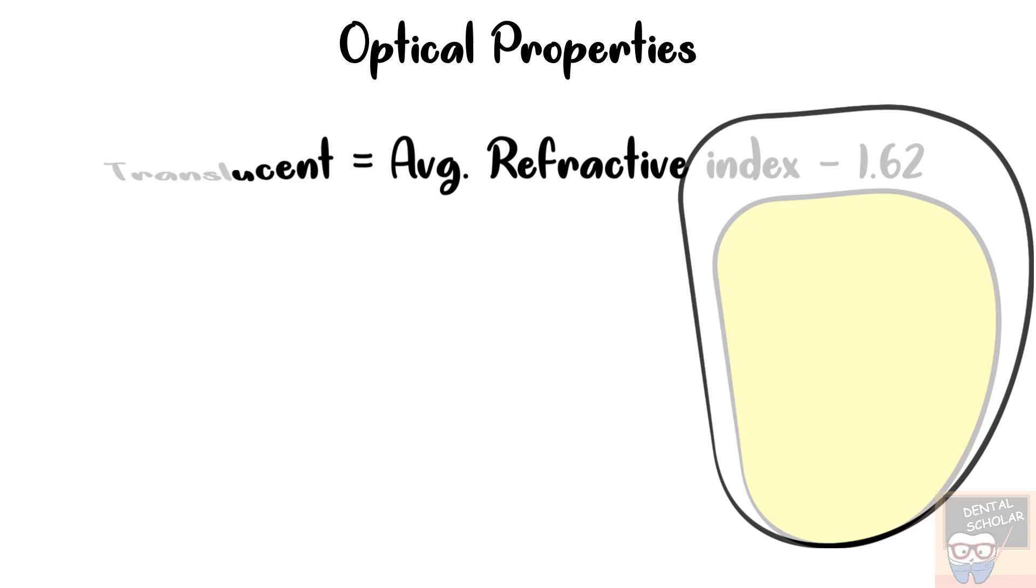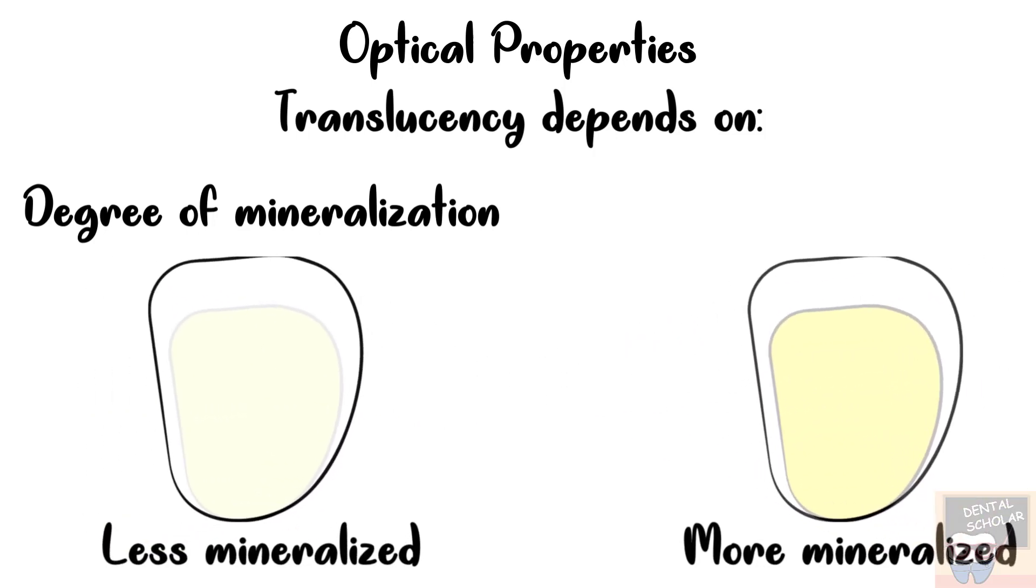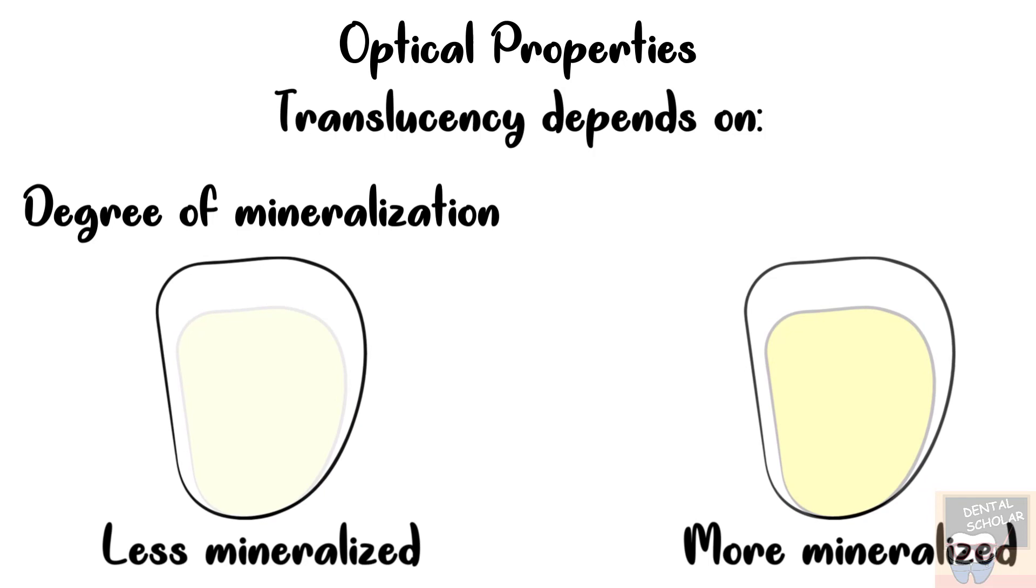The translucency of enamel depends on some factors like degree of mineralization. As the mineralization increases, enamel becomes more and more translucent. So when enamel is less mineralized, it is more opaque or less translucent. And when enamel is highly mineralized, it becomes more translucent. So with increasing translucency or increasing mineralization, the tooth appears more yellowish because more of dentine is seen from the translucent enamel.